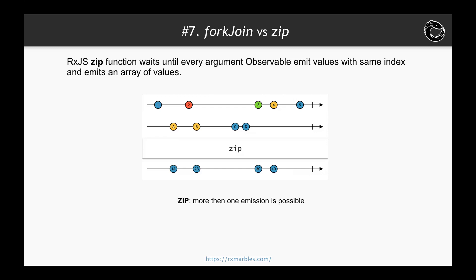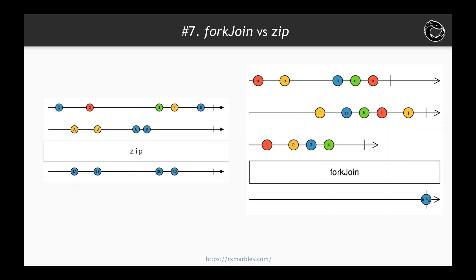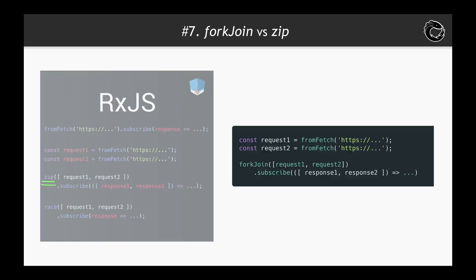To prevent such possible drawbacks, you can use the forkJoin function. ForkJoin waits for all argument observables to complete and then emits an array of their last emitted values. To compare, zip emits an array of values with the same emission index. Now our example will look like this. Beware of that difference.